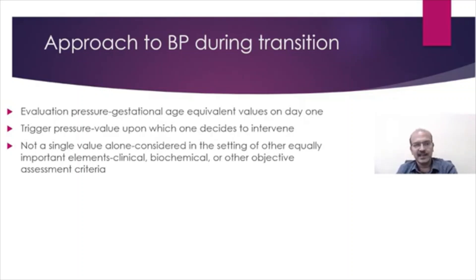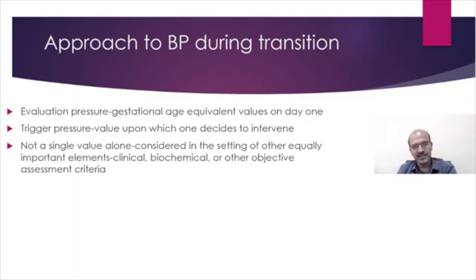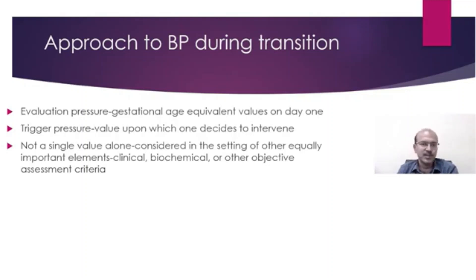The trigger pressure also considers lactate, neurology, and responsiveness of the baby. There was a concept of permissive hypotension where the trigger was set lower — if capillary filling, urine output, and lactate are normal, one could decide not to intervene. However, the EPIPAGE study analysis showed that babies where intervention was active had better outcomes compared to those where permissive hypotension was allowed, so this approach is not always safe.